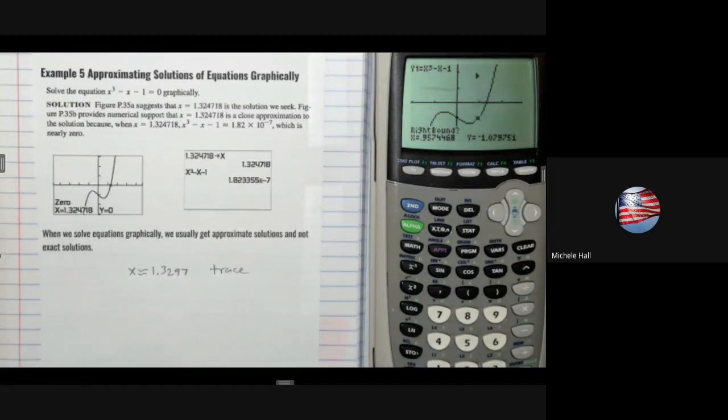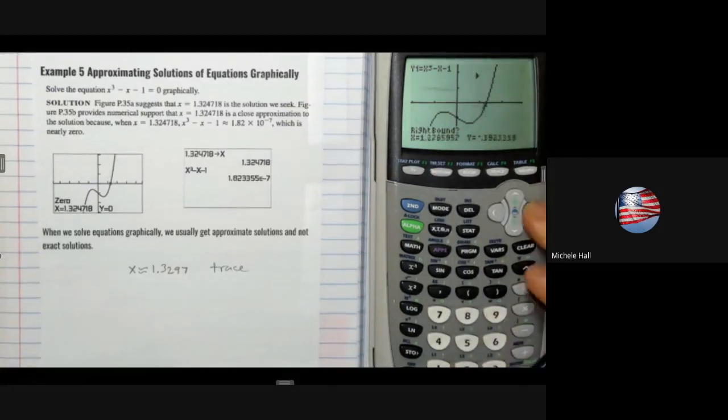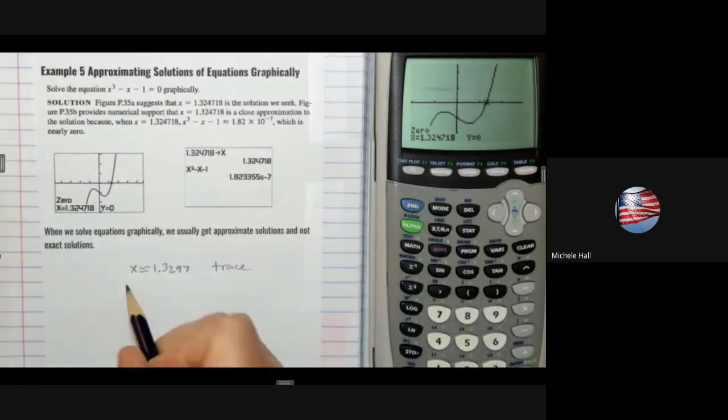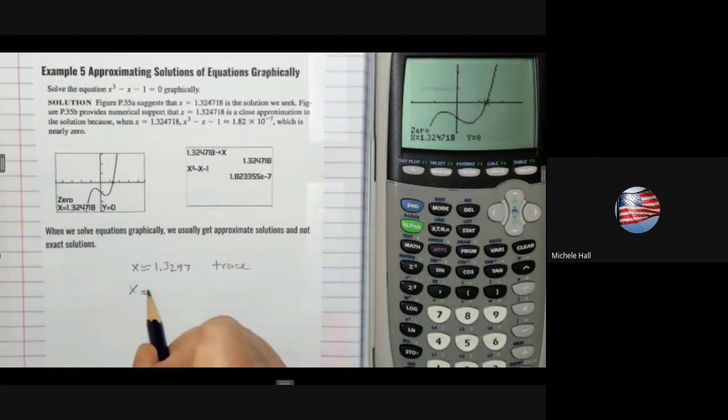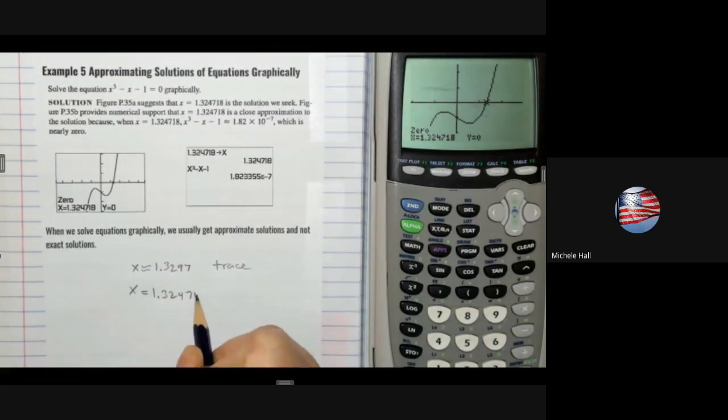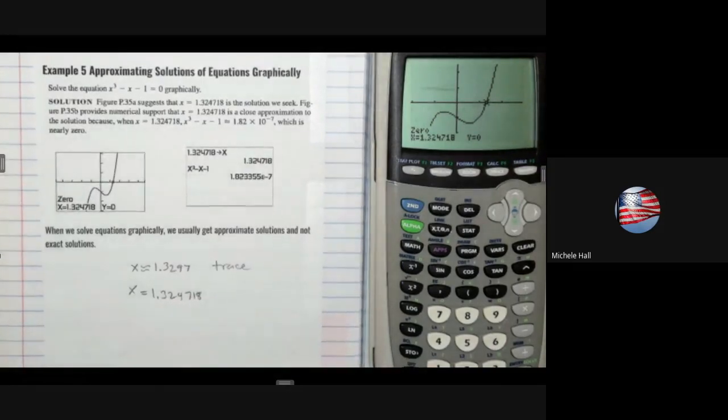There's the arrow. Now it's asking for a right bound. So I need to be on top of the function, on the right-hand side of the x-intercept. Enter, and hit enter again. It says 1.324718, and then it stopped. So it's exactly that number.